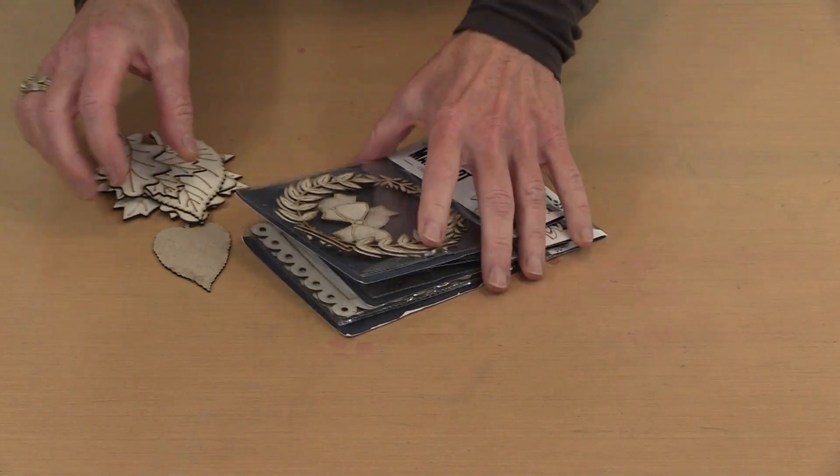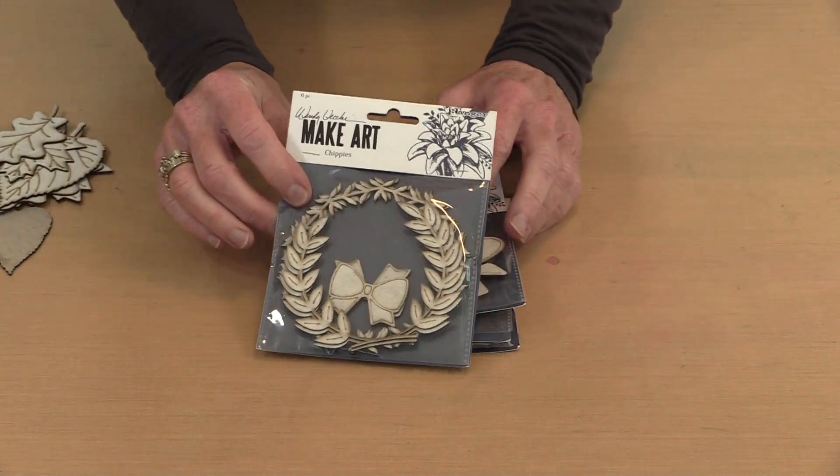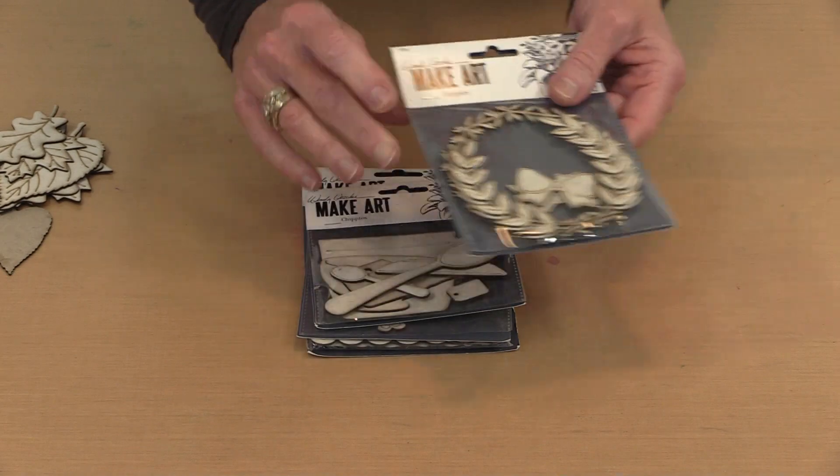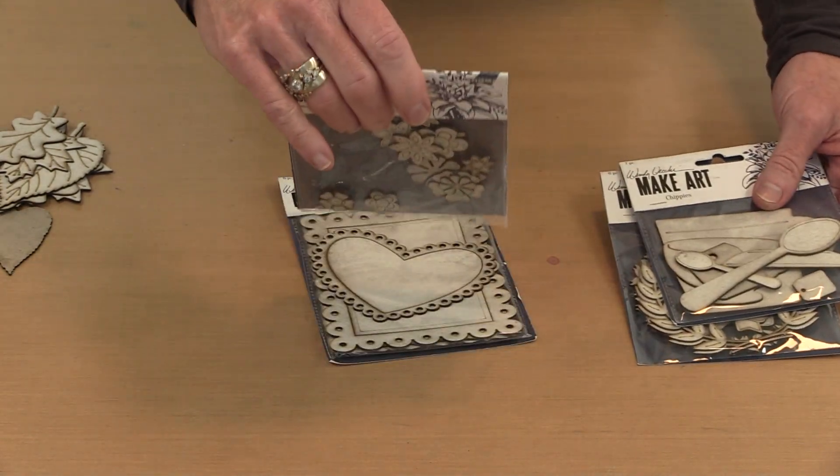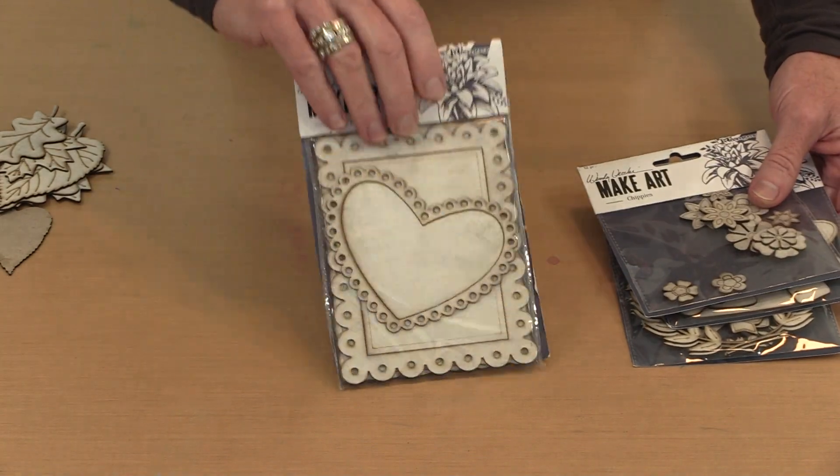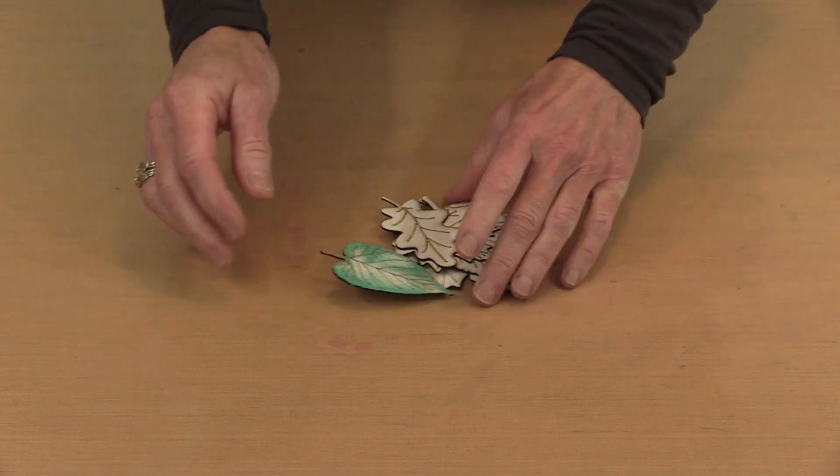Up next are Wendy's Chippies and there are five sets included this time. So let me just show you them this way. This is called Wreaths. This is named Beverages. This is Blossoms. This is Bases and Frames. And then here is the Lots of Leaves.